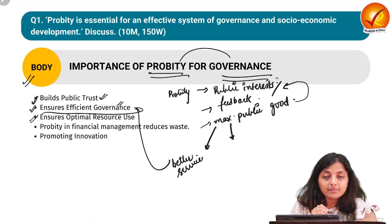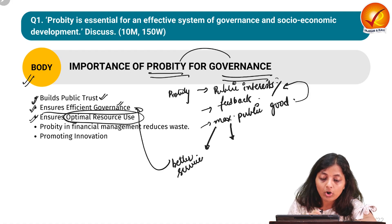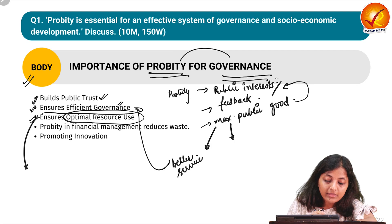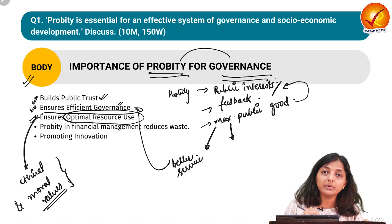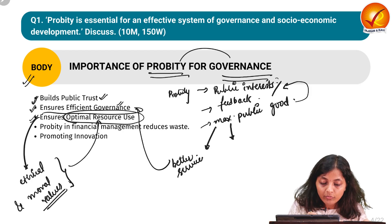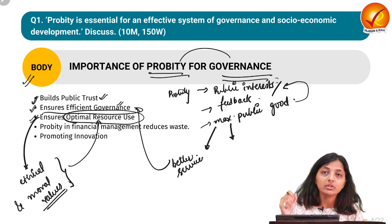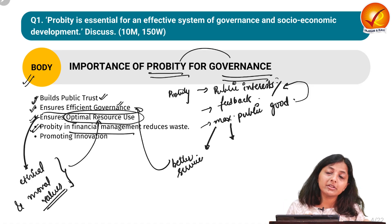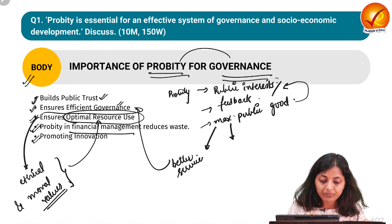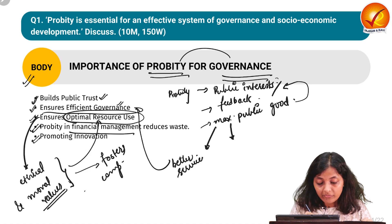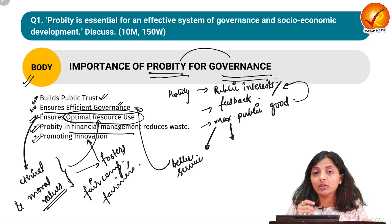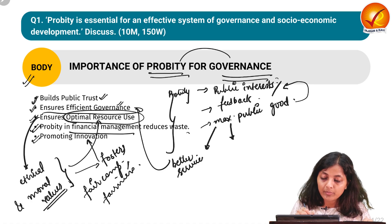When propriety is present in financial administration, it ensures optimal resource utilization - the governance will not engage in anything corrupt or along the lines of bribery, so there are no leakages from corrupt practices. Propriety in financial management also reduces wastage. When ethical and moral standards are maintained in governance, it fosters fair competition and fairness, promotes innovation, and promotes a knowledge-based society.